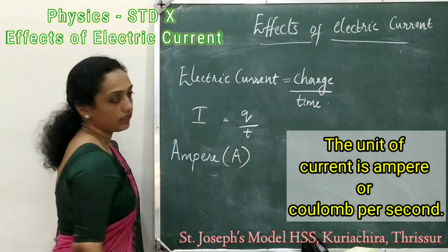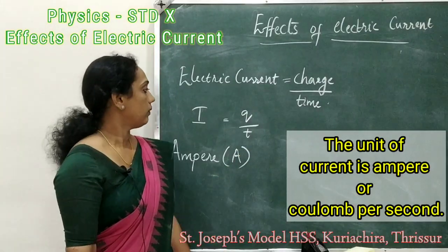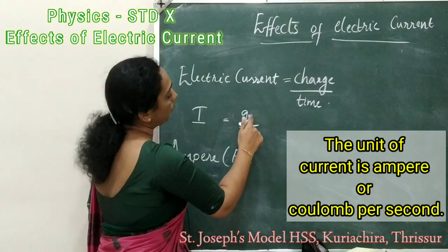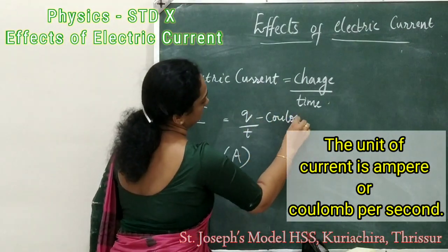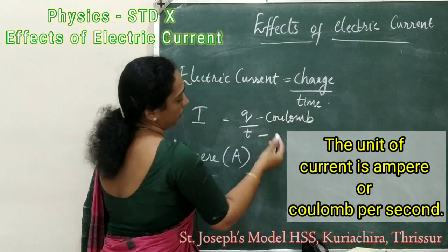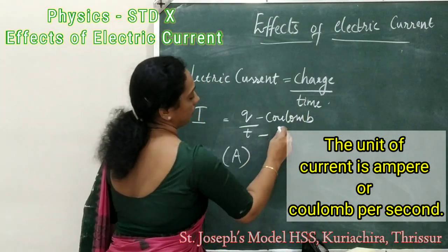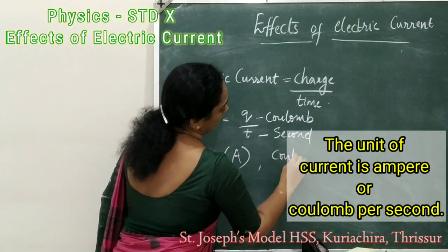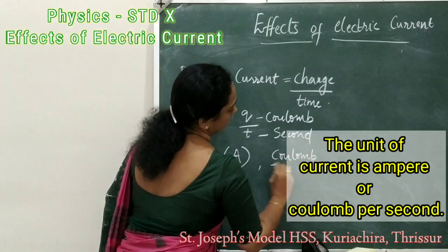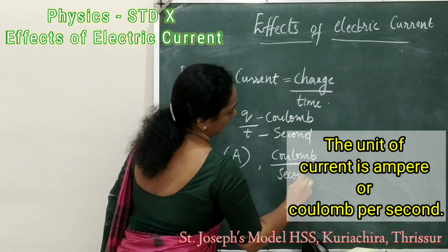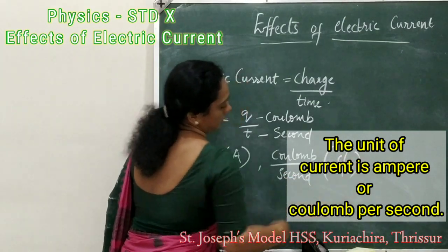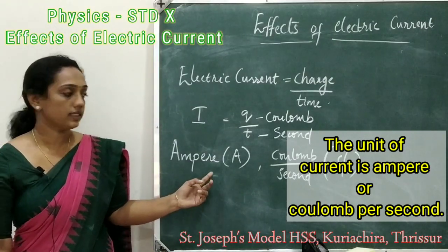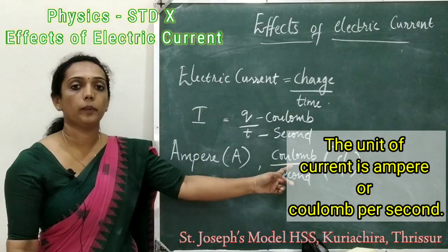Ampere is denoted by the letter capital A. One more unit for current: the unit of charge Q is coulomb, and the unit of time is second. So coulomb per second, or C/s, is another unit of current. The unit of current is ampere or coulomb per second.